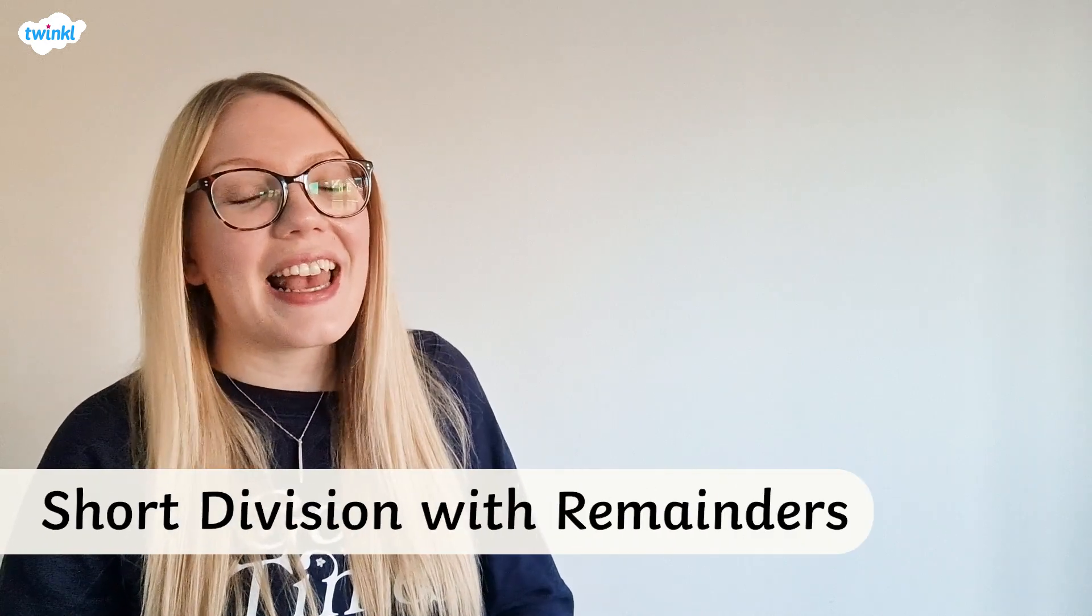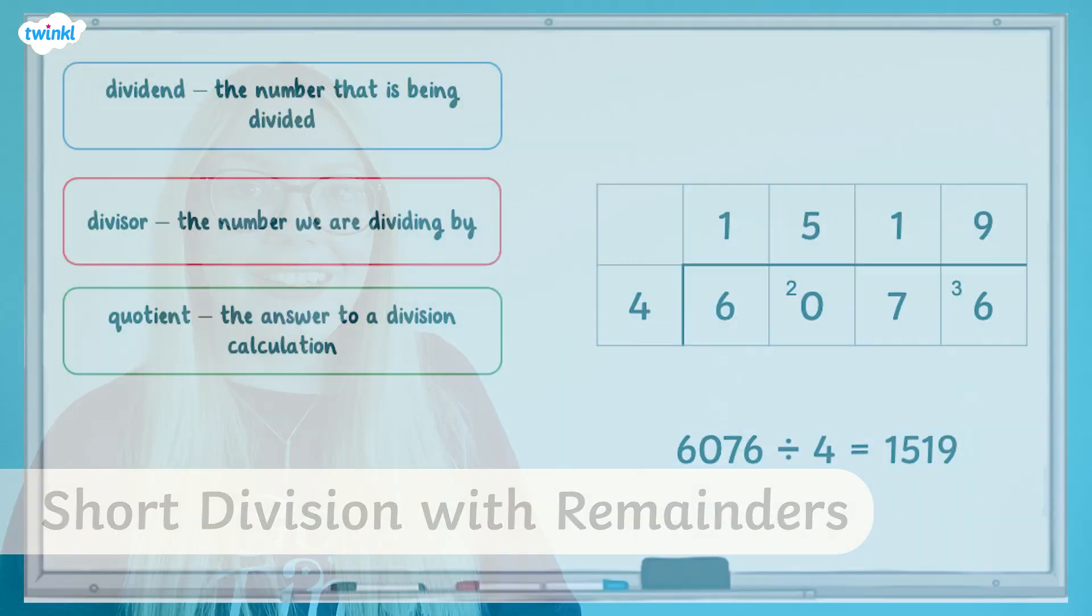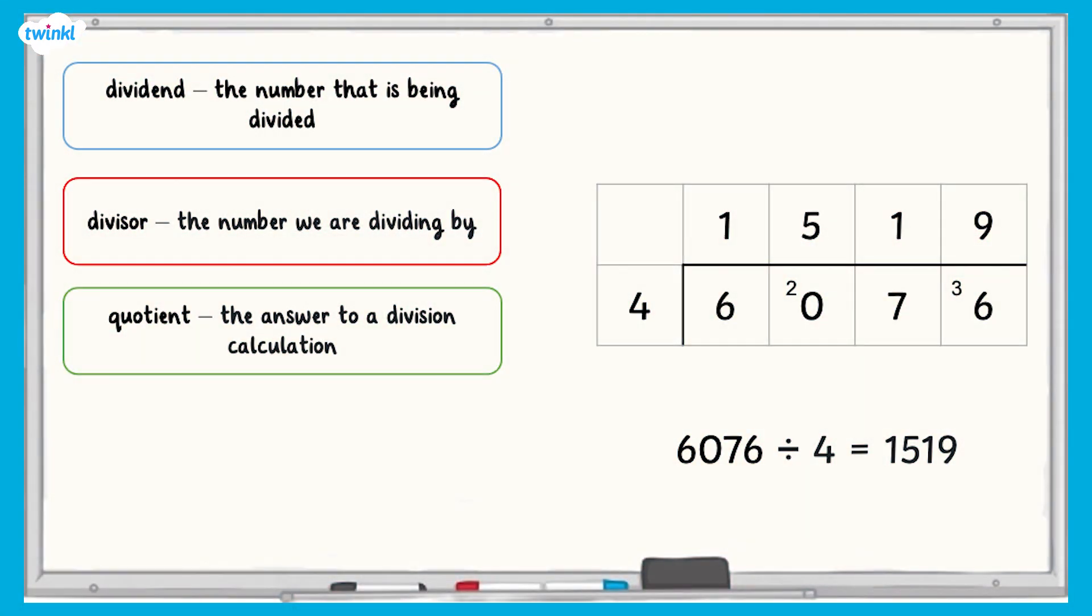This video is here to help you carry out short division with remainders. In this example, which of the numbers is the dividend, the number being divided, the divisor, which is the number we're dividing by, and the quotient, the answer to the division calculation?